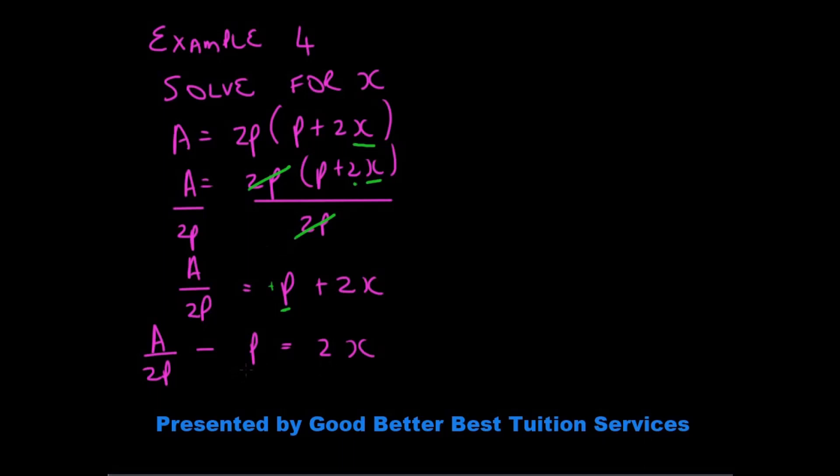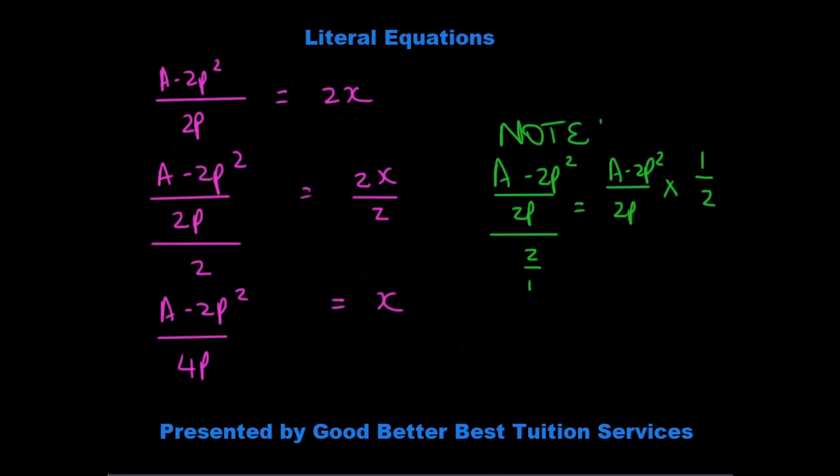What we want to do now is simplify the expression on the left hand side by finding our LCM and our LCM in this case is 2p.